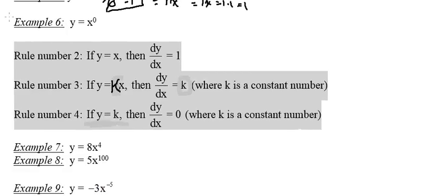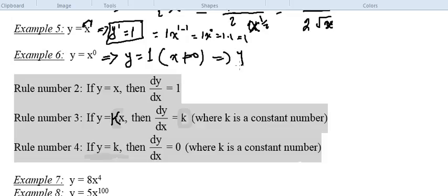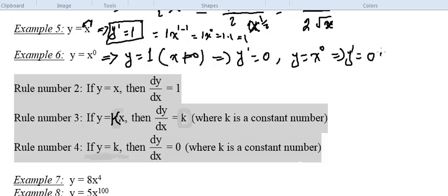Example 6: we were doing the power rule. y equals x to the power 0. Now x to the power 0 is 1, provided x is not equal to 0. So the derivative is equal to 0. Or we can apply the power rule directly: y equals x to the power 0 implies y prime equals 0 times x to the power (0 minus 1), which is 0 over x to the power 1, for x not equal to 0. That equals 0.